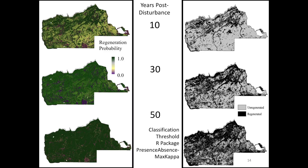Now that we have this model, we can predict a continuous regeneration probability surface. A map shows regeneration probability after 10 years post-disturbance predicted over the landscape from 0 to 1, with dark green being areas more likely to regenerate. As it changes from 30 to 50 years, much of the landscape has a very high probability of reaching 3 meters. Using a classification threshold, perhaps a third of the landscape might reach 3 meters within 10 years, but even after 50 years there are still quite a few areas predicted not to reach a 3-meter height.